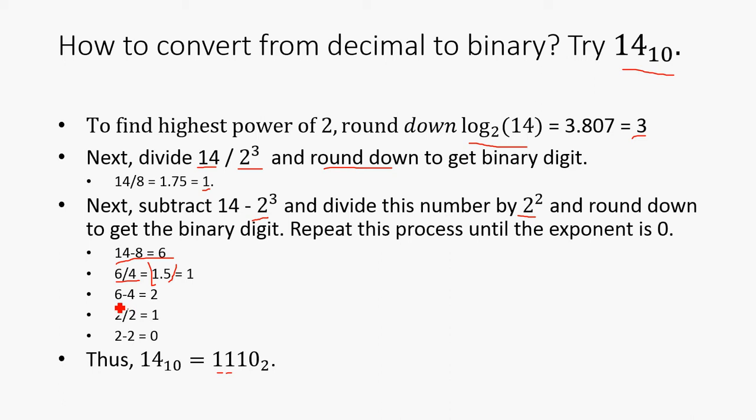Next we subtract it out, then we get 2. 2 divided by 2 to the 1 is going to be 1. So that gives us our next digit. And then 2 minus 2 is 0. Clearly everything after here is going to be 0, because this number right here is 0. So thus 14 is going to look like 1, 1, 1, 0 in binary.